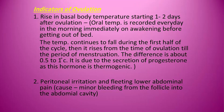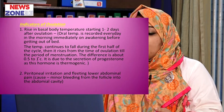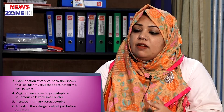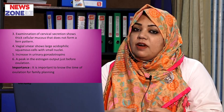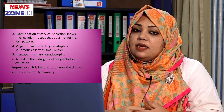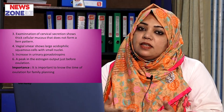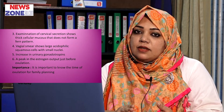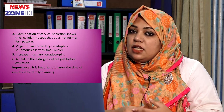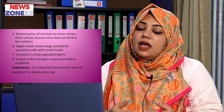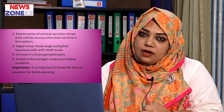There may also be peritoneal irritation and lower abdominal pain, because there may be minor bleeding in the abdominal cavity from the rupture of the follicle. Next, if we examine the cervical secretion, we will find that it is thick and does not form a fern pattern. Usually, if the cervical secretion is thin, it will form a fern pattern, but during the time of ovulation the cervical secretion becomes thick and will not form a fern pattern.